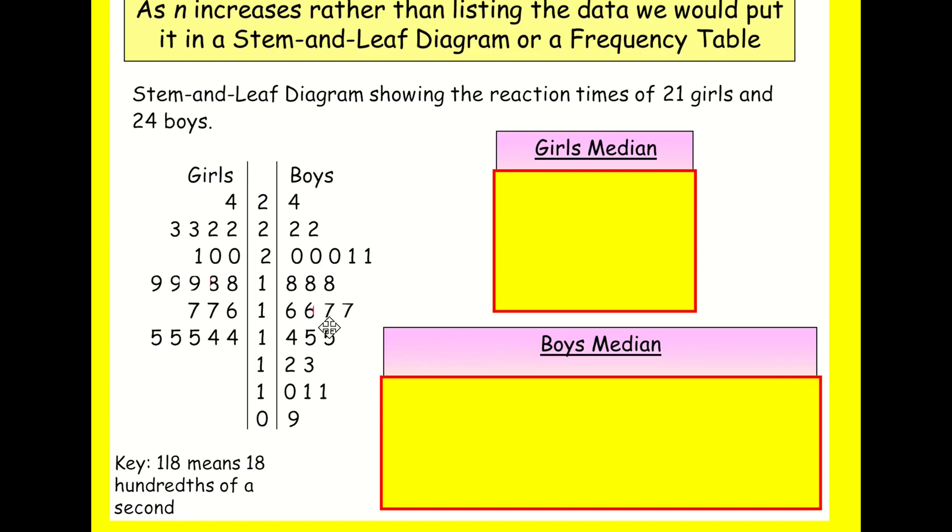So just a reminder, like this, this five here, actually means 15 hundredths of a second, which would be 0.15, if I divide that by 100. And the key says that one with the line eight means 18. Remember, this is called the stem down the middle, and then we've got the leaves either side.